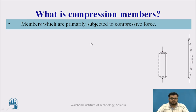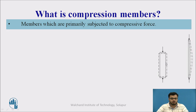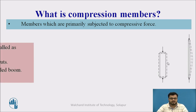This diagram represents one short column and one long column. A short column is one whose slenderness ratio is less than 12, and a long column is one whose slenderness ratio is greater than 12. Basically, a short column will fail by crushing and a long column will fail by buckling.